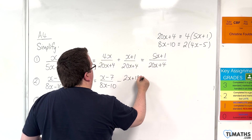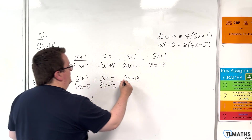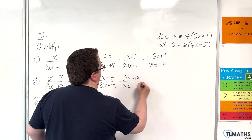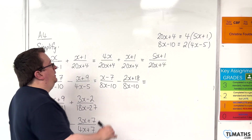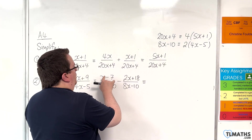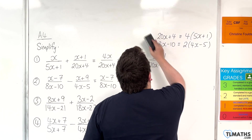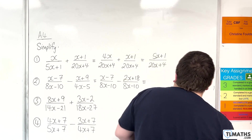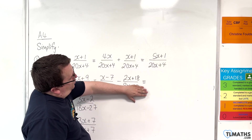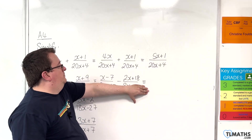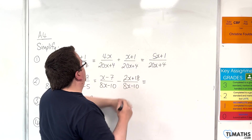That gives us 2x plus 18 over 8x take away 10 for the second fraction. Now combining the numerators — just a word on this. If we ignore the denominators, we have x take away 7, take away 2x plus 18.